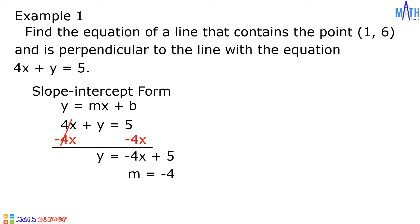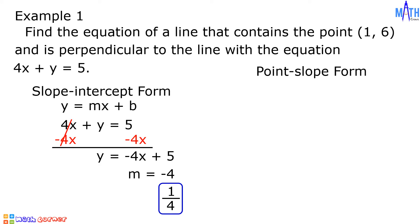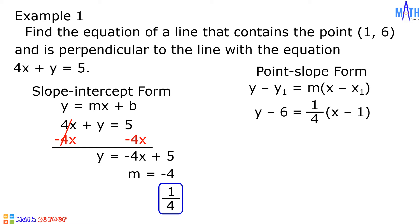The negative reciprocal is 1 over 4. It means that the slope of a line that contains the point (1, 6) has slope 1 over 4. Now that we have the point and slope, let us use point-slope form in writing the equation of a line. Let us substitute the given values: y minus y-sub-1 becomes y minus 6, equals m becomes 1 over 4, times the quantity x minus x-sub-1 becomes x minus 1.